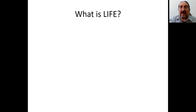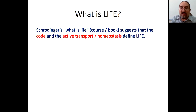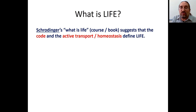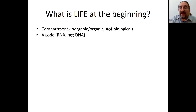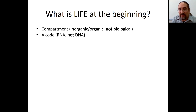I'll start with what is life. Schrödinger, in a book written even before we knew about DNA, suggested that life requires mainly two things: a code, and the idea of active transport, which is responsible for homeostasis. In the beginning, it is difficult to assume that everything existed — evolution, replication, active transport, and the code.